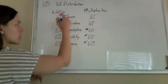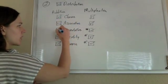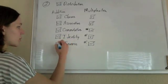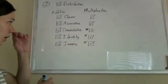Are they closed? No problem there. Associative, nothing funky going on. Commutative, nothing going on. Identity, not a problem. Inverse, not a problem.